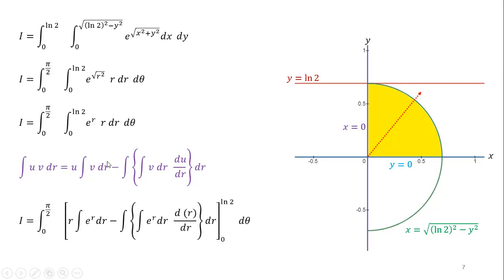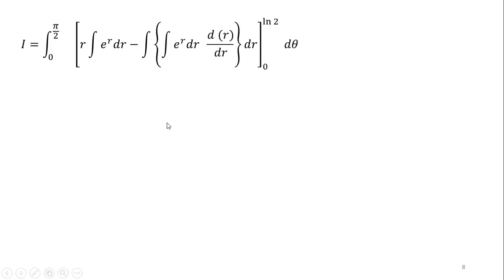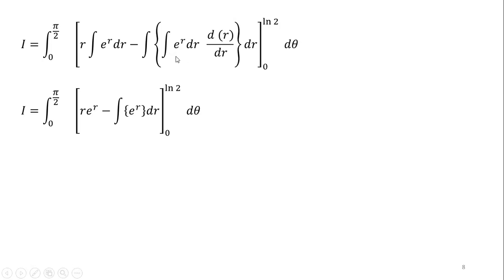We take u = r and v = e raised to power r, so that during differentiation the derivative of r becomes a constant, eliminating the integration sign. Applying integration by parts — integral of u times v equals u times integral of v dr minus integral of (integral of v dr) times derivative of u dr — and rewriting: the integral of e raised to power r is e raised to power r, and the derivative of r is 1, giving us r times e^r minus e^r.